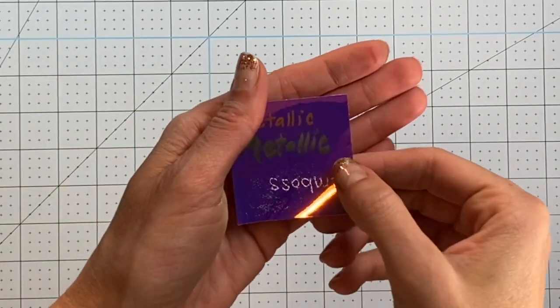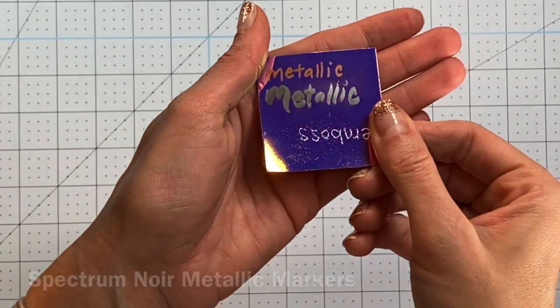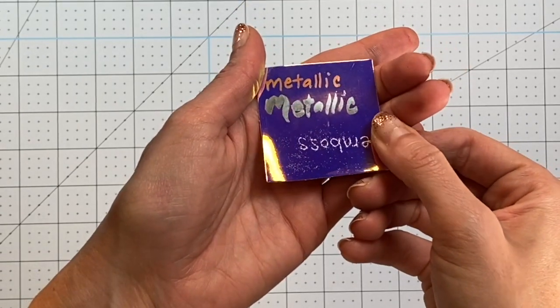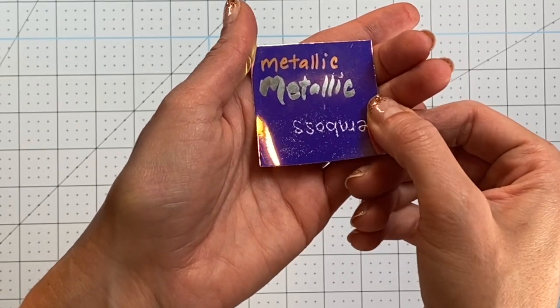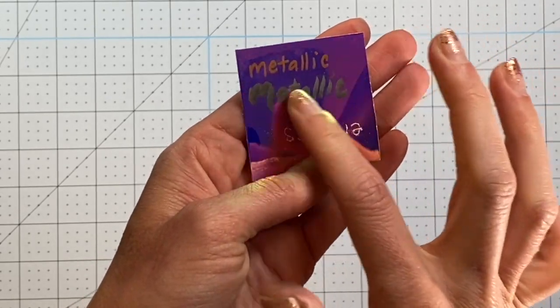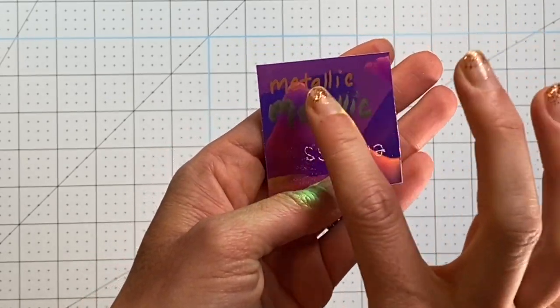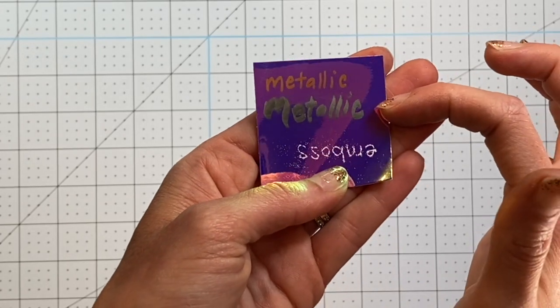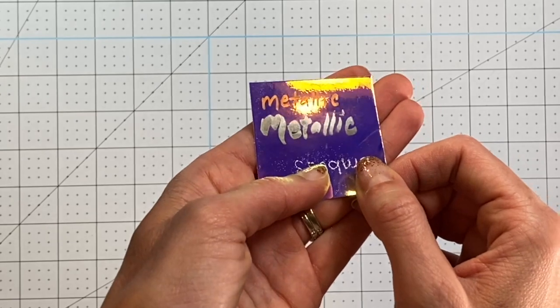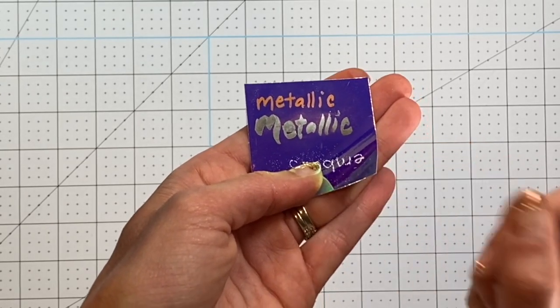Well, one last option to show you because I got my metallic markers after doing the last demo is that they do work well on the holographic paper. It did take a little bit of time to dry, so especially the brush tip, it took a little bit longer to dry. So this is the bullet tip, this is the brush tip, and they do dry and show up nicely though. So that's another option on the holographic paper.